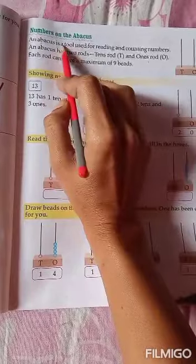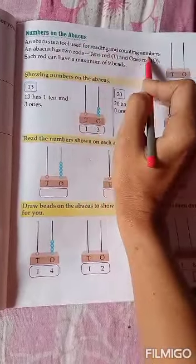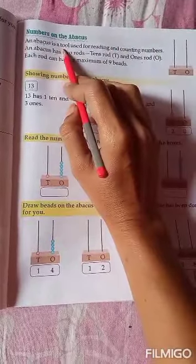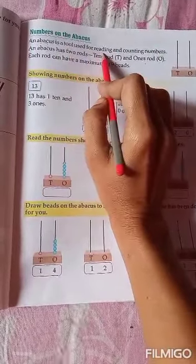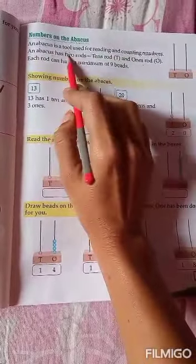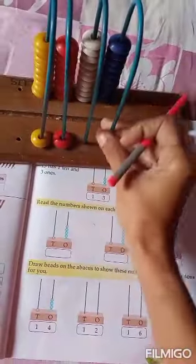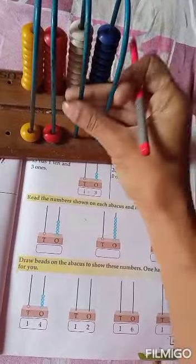An abacus is a tool used for reading and counting numbers. Abacus is a tool in which we can read the numbers or count the numbers. An abacus has two rods. I have told you, this,